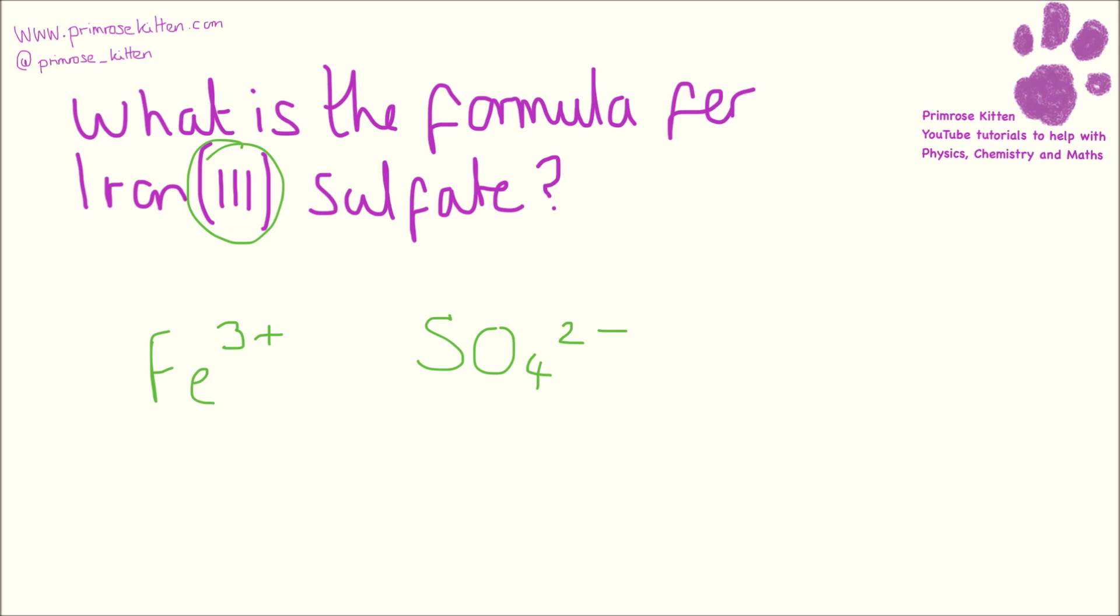Now we need to have a neutral compound overall. So if we imagine iron as a block like this, sulfate as a block like this, we are going to need to be building up blocks until they cancel each other out. So if this positive and this negative cancel out, this positive and this negative, this positive and this negative, this positive and this negative, we are going to need another little sulfate block on there like that.